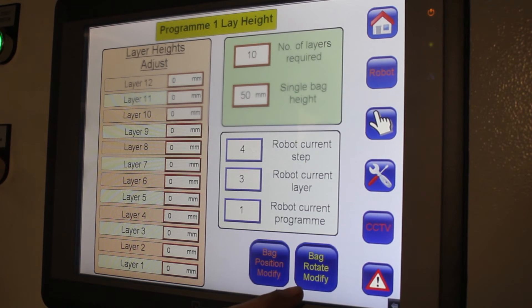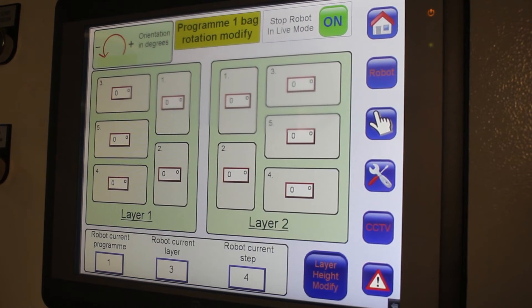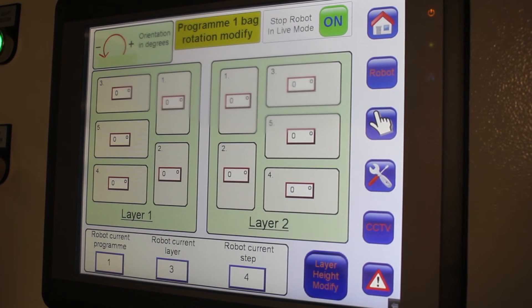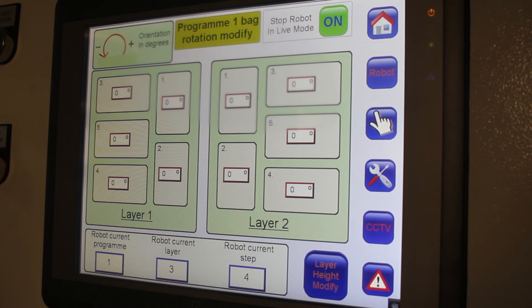The next one then will be your rotate page. Once the rotate page again, now it's the same as the modify page, but what you've got is the position value for rotating it.